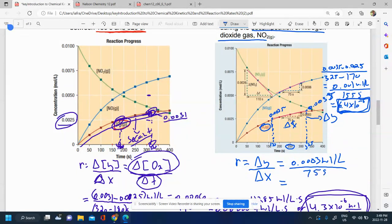So the one provided in the book is 0.0003 moles per liter over 75 seconds. And that's going to give us, so 0.0003 divided by 75, we get 4.0 times 10 to the power of negative 6 moles per liter per second.